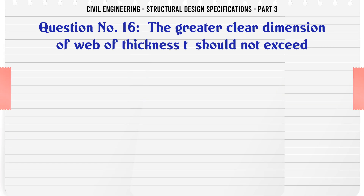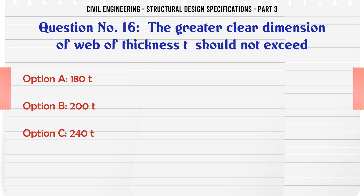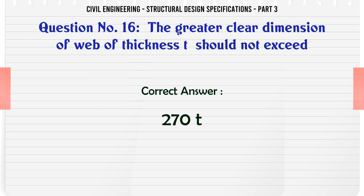The greater clear dimension of web of thickness T should not exceed: a. 180t, b. 200t, c. 240t, d. 270t. The correct answer is: 270t.